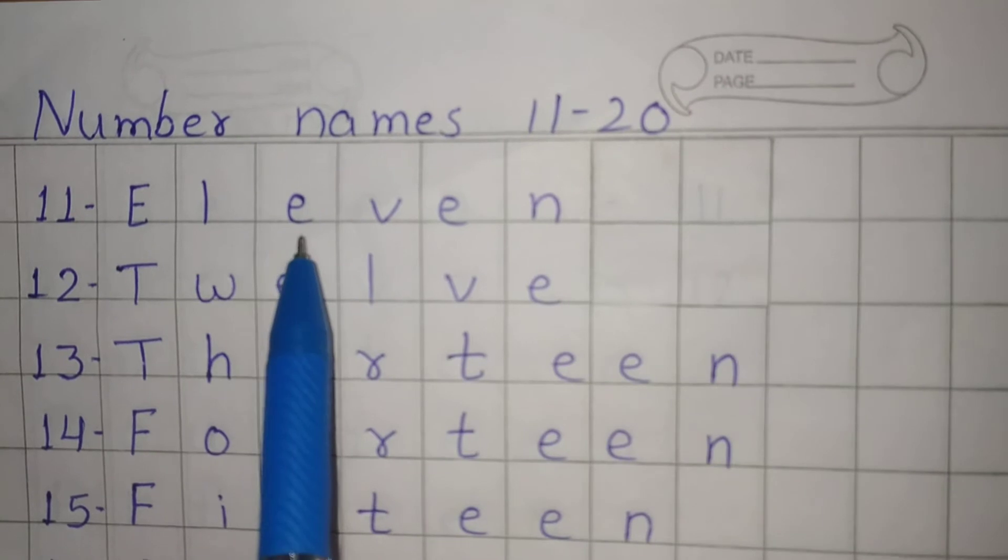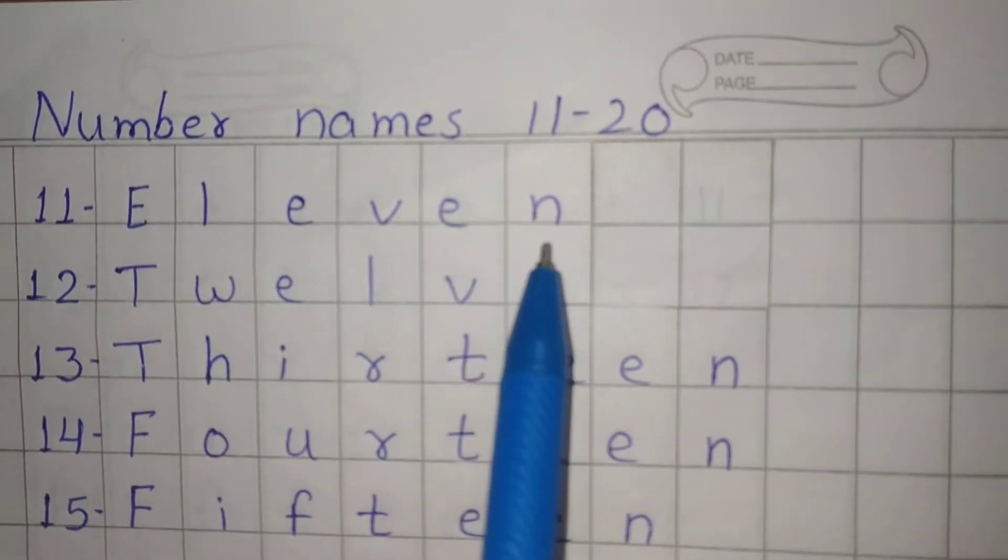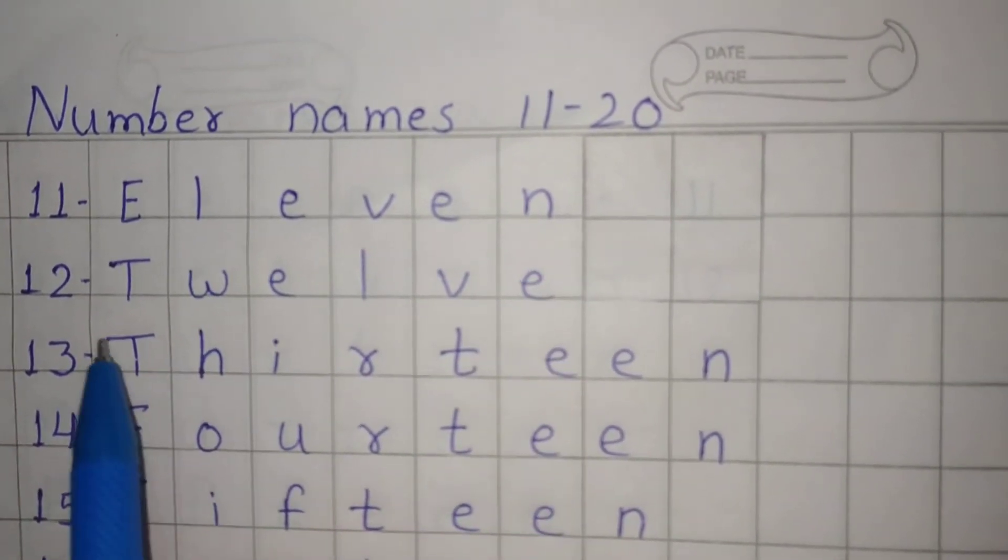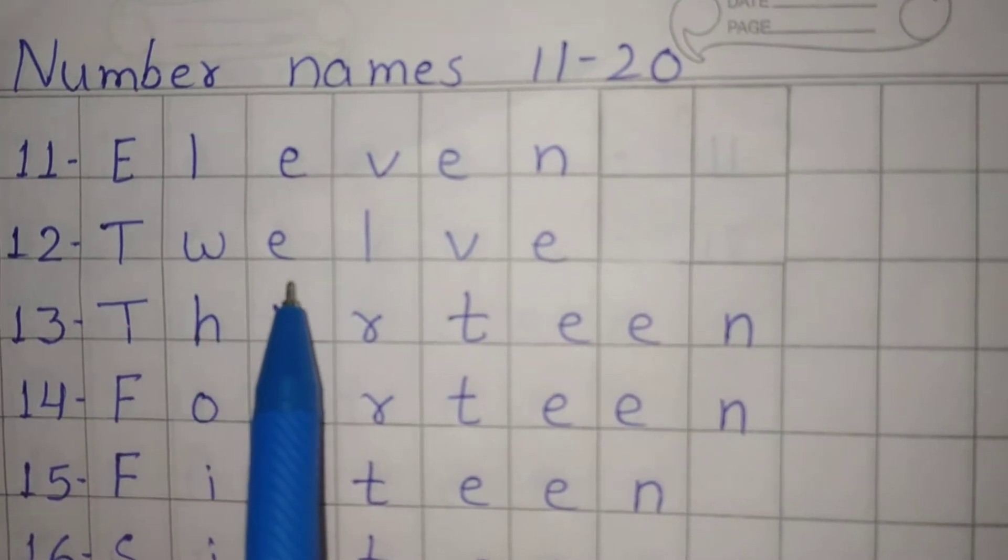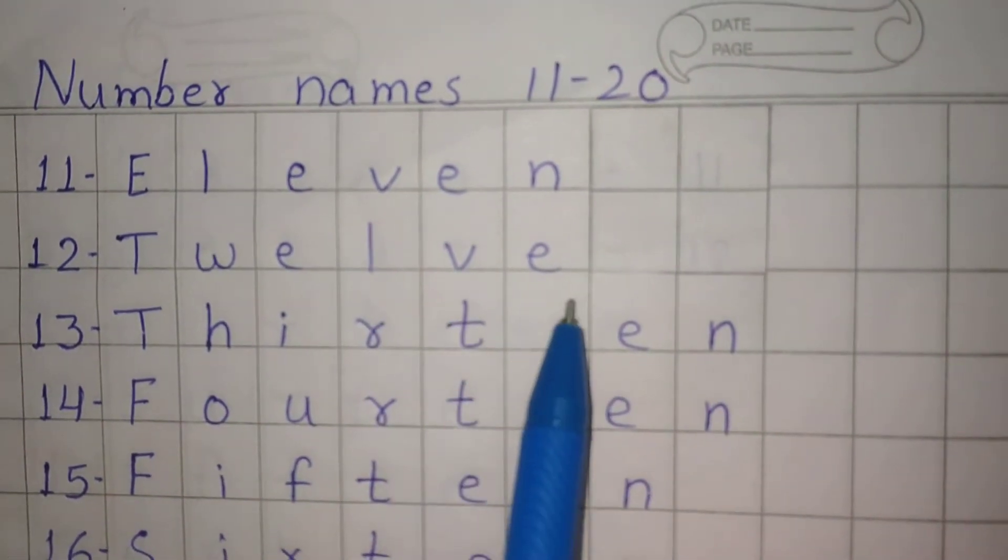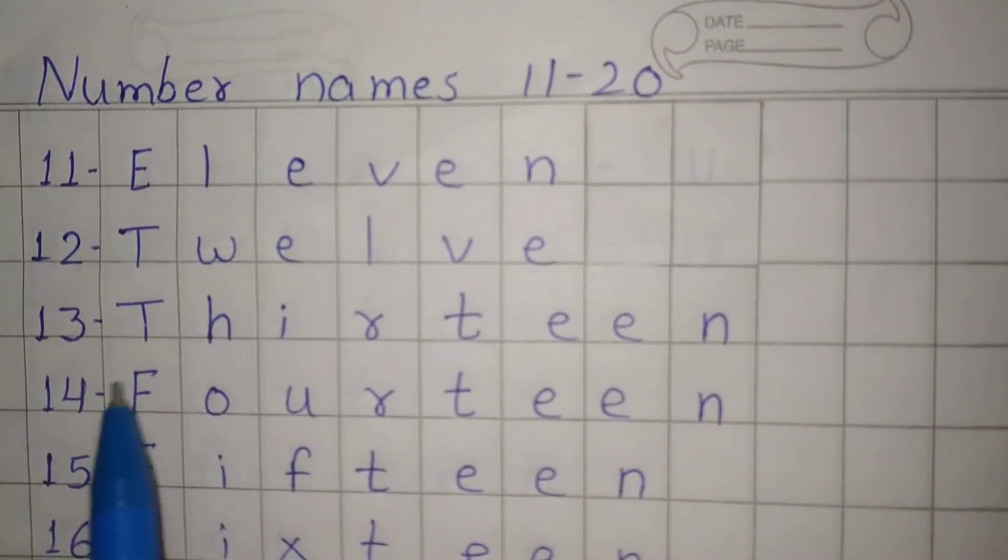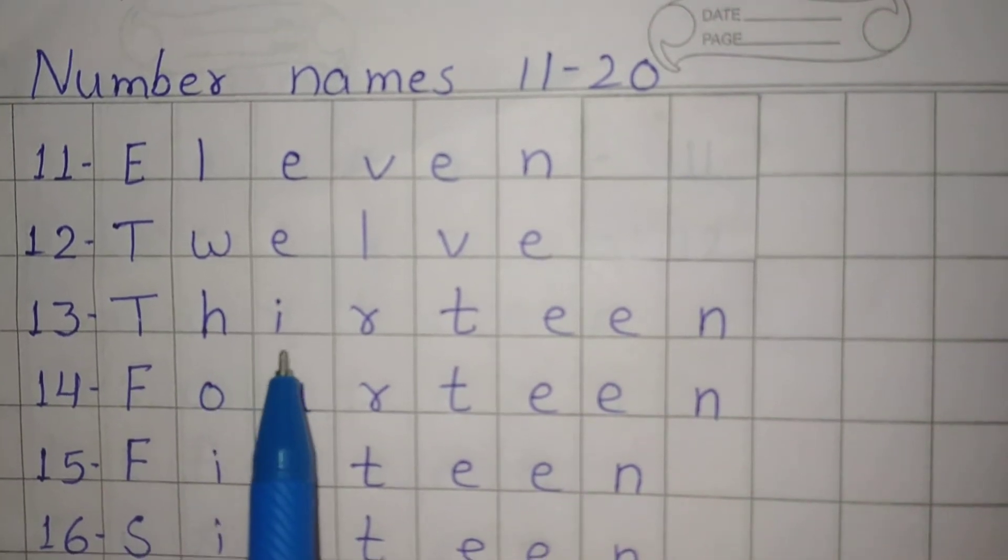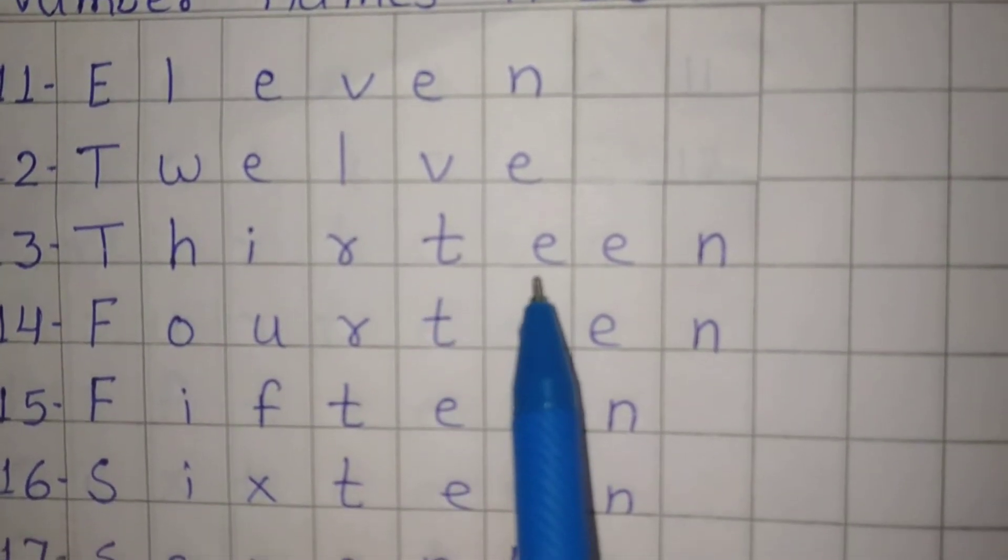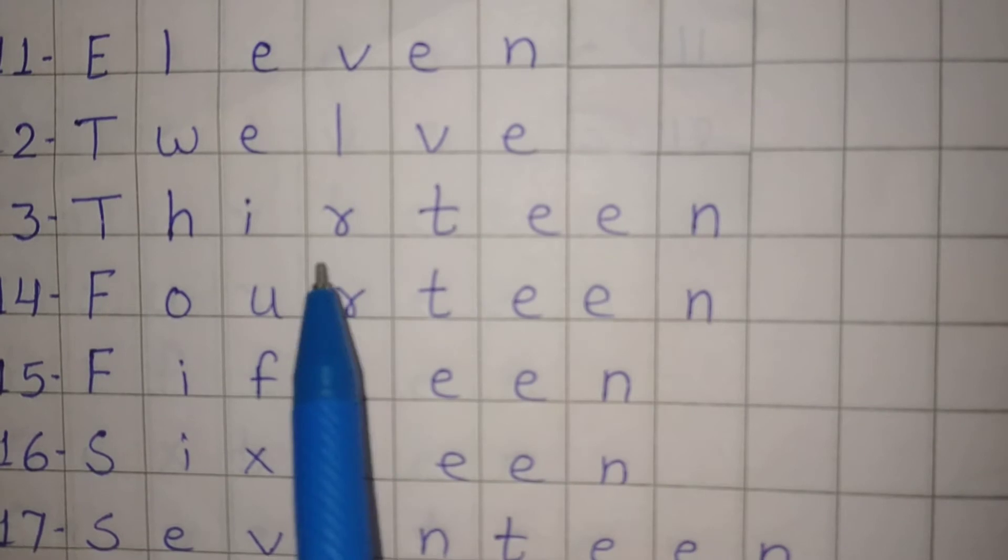Number names 11 to 20. Eleven: E-L-E-V-E-N, 11. Twelve: T-W-E-L-V-E, 12. Thirteen: T-H-I-R-T-E-E-N, 13.